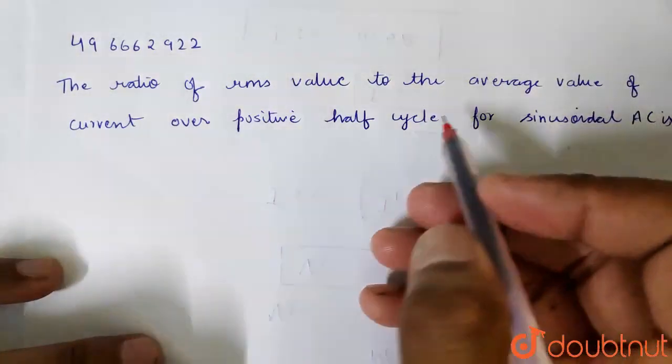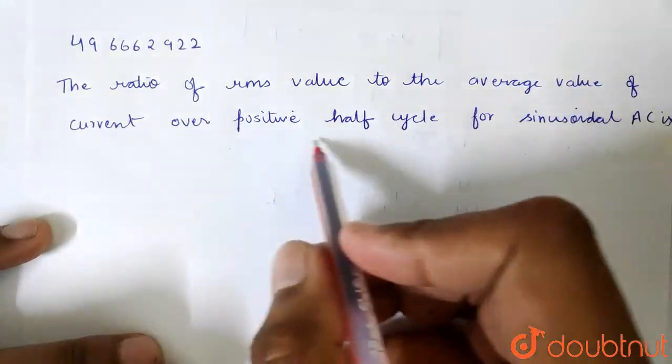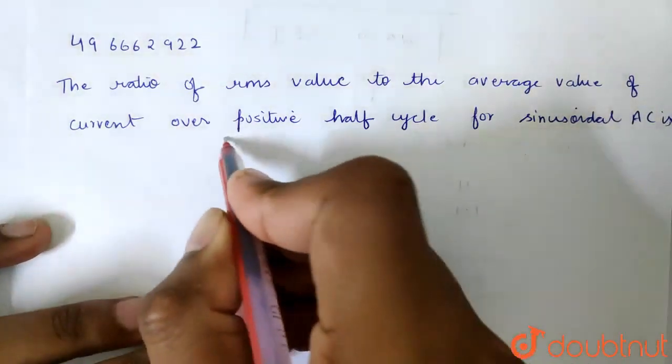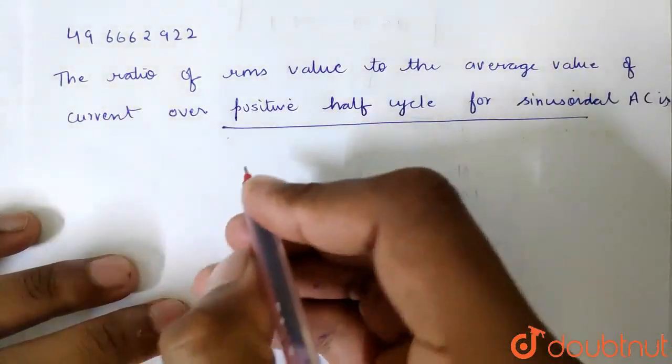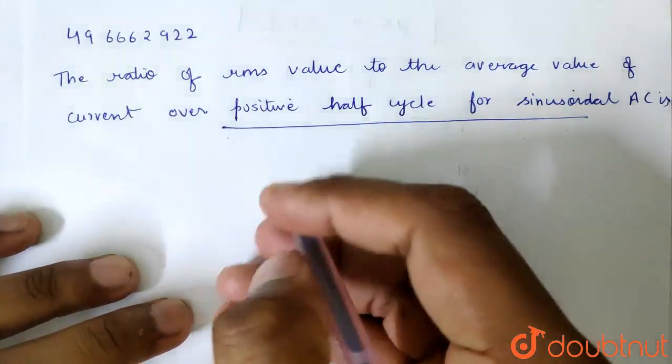The question is: what is the ratio of RMS value to the average value of current over a positive half cycle for sinusoidal alternating current?